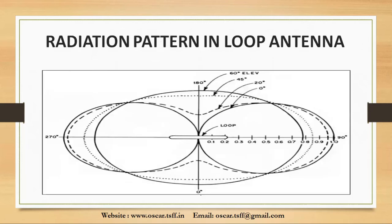Now let's look at the radiation pattern. The radiation varies with the perpendicular. The line through the loop shows its maximum directivity, and the loop can radiate from any direction. The radiation of a loop is mostly end-fire.